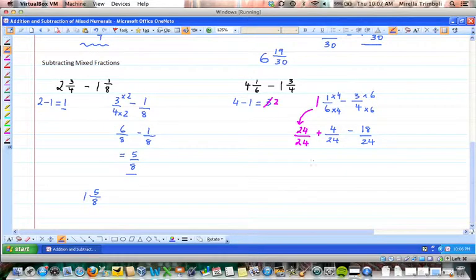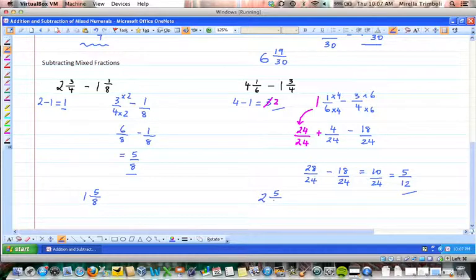So what I'm looking at now is 28 over 24, if I add the 28 plus the 4, take 18 over 24, and that gives me 10 over 24. That can be simplified further by dividing top and bottom by two, so I have 5 over 12. So I have two whole numbers, 5 over 12, so my final answer is 2 and 5 over 12.